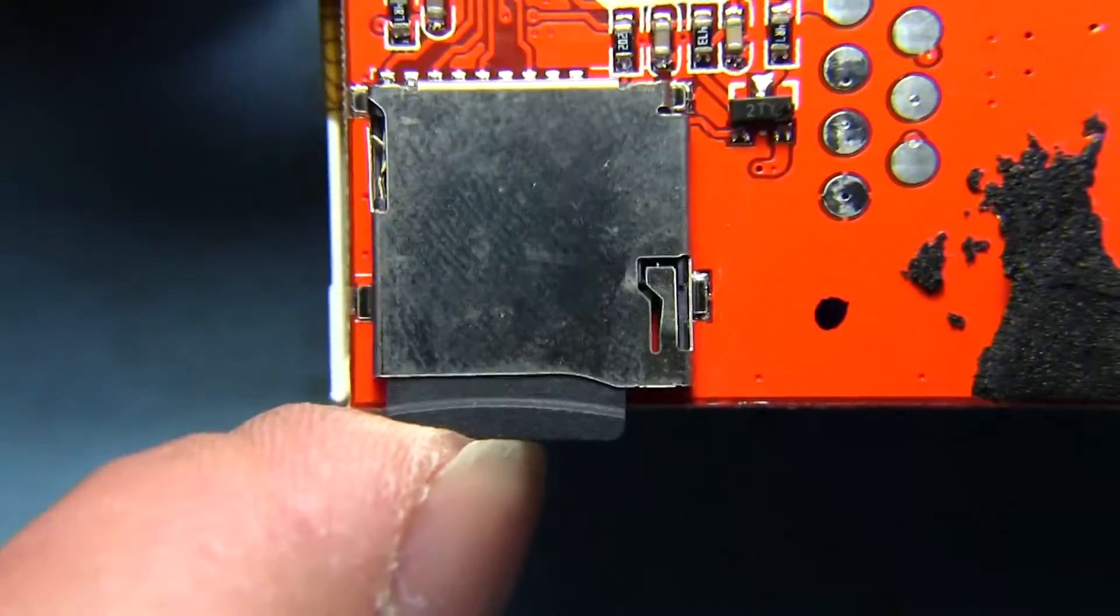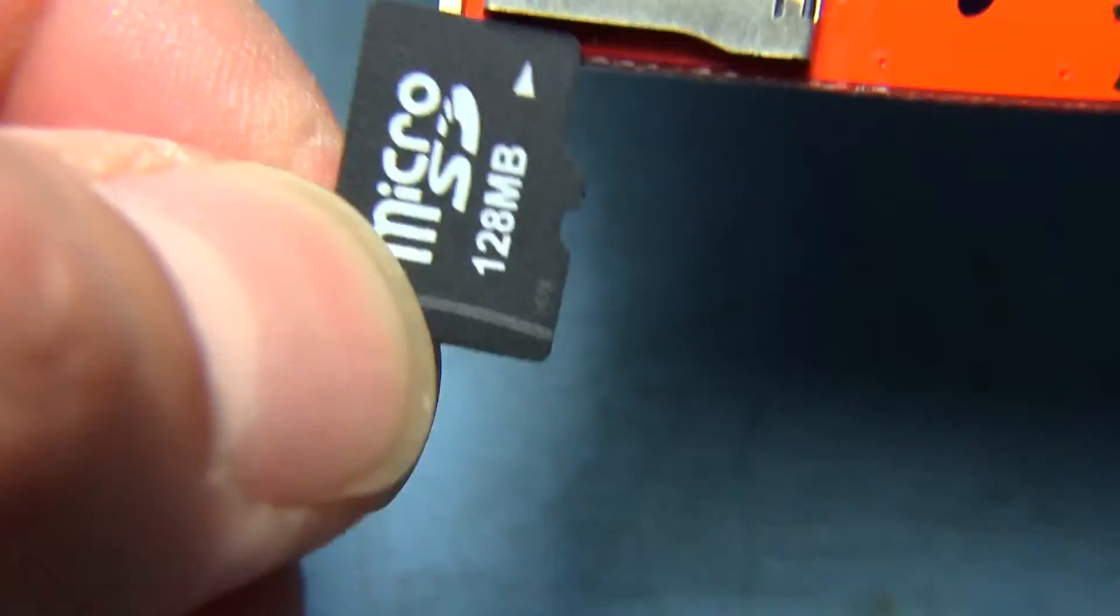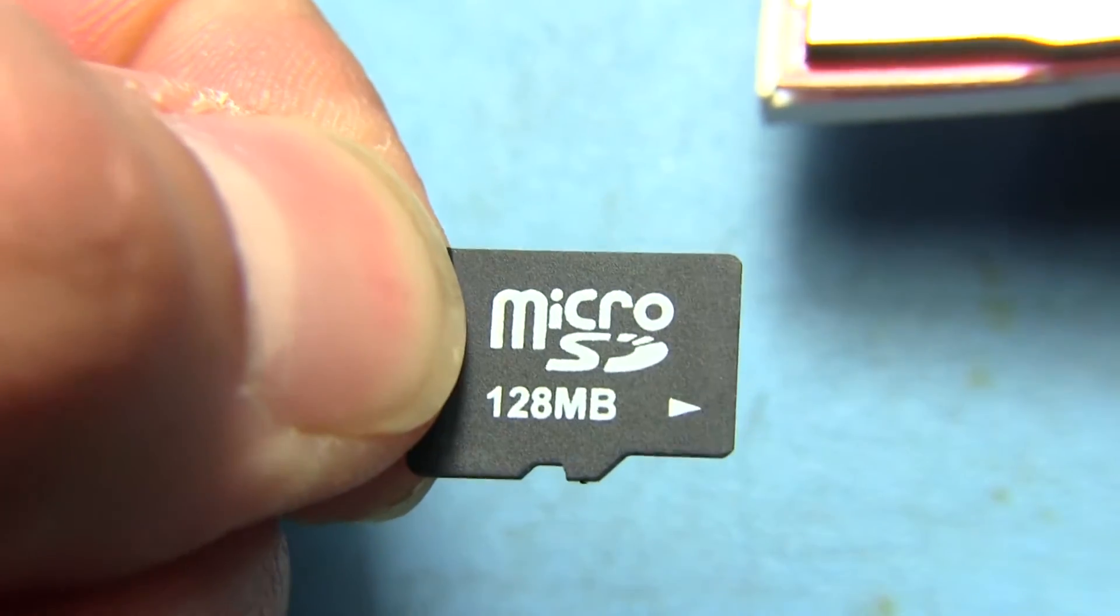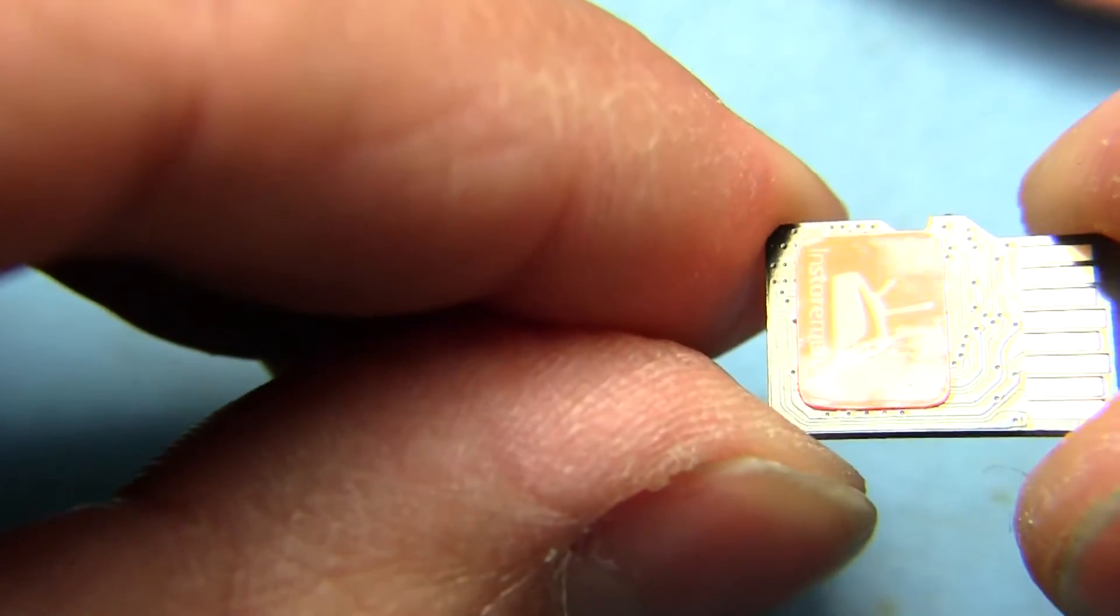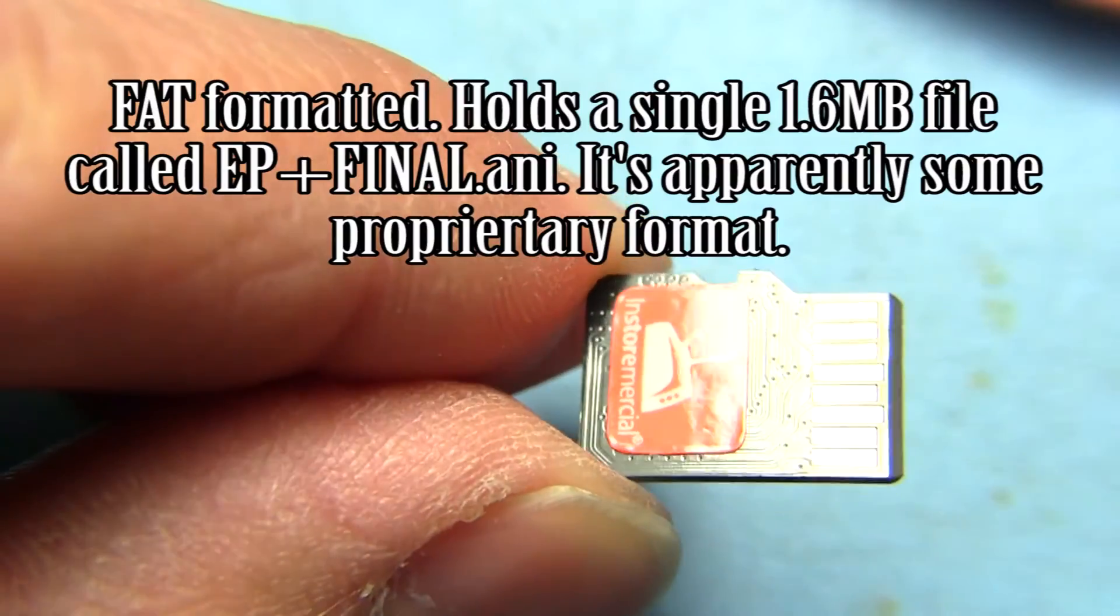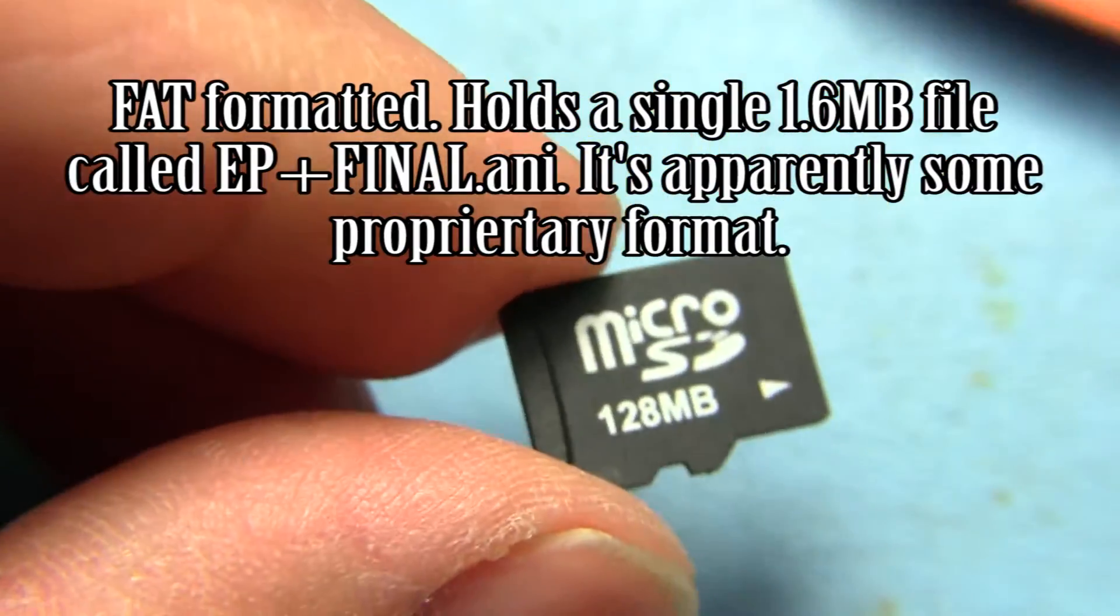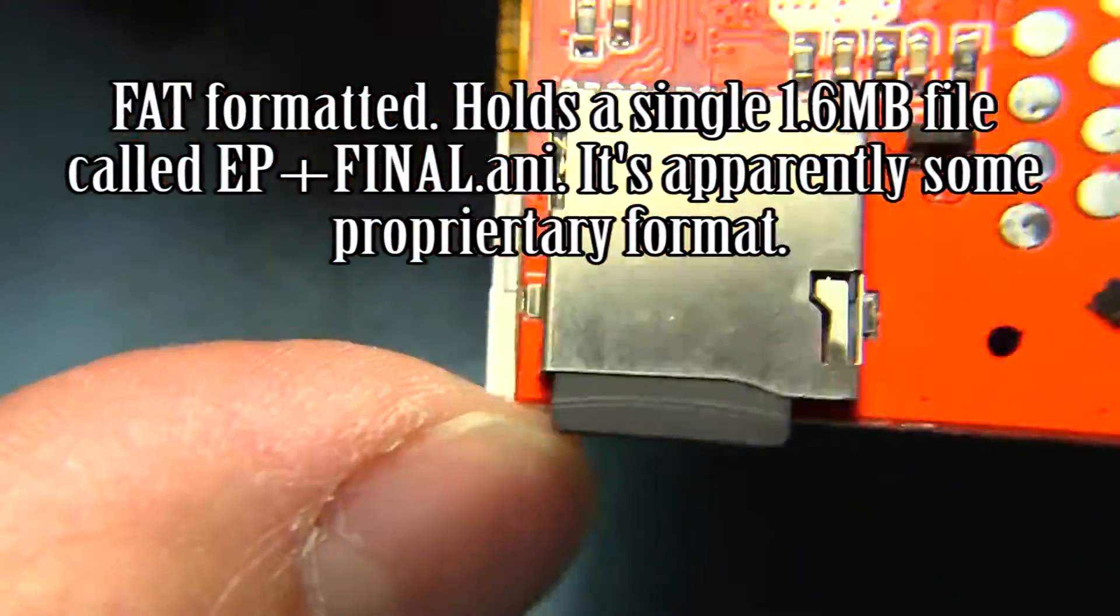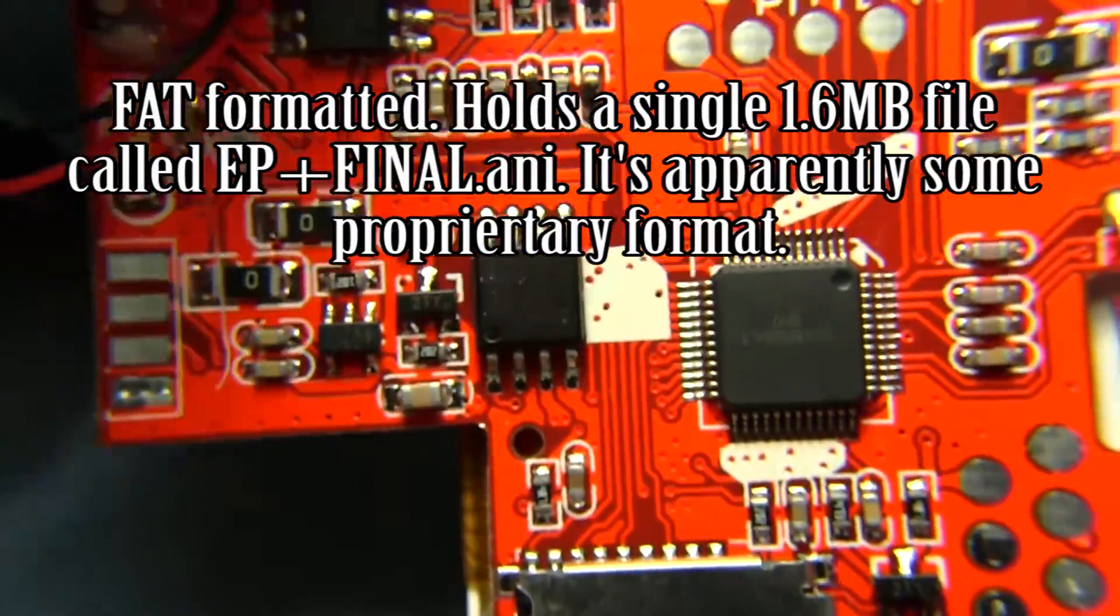There's our micro SD card. Pop that out. Whoa. Oh, whopping 128 megs. Of course, they're not going to be using like really high quality video. It actually looks super grainy when you look at it there. That looks like just a regular micro SD card. I don't think they've done anything special to it. So I don't know if we'd have the same issue we had with the other one where once we stuck it in a computer we actually couldn't see what was on it because supposedly it was encrypted.